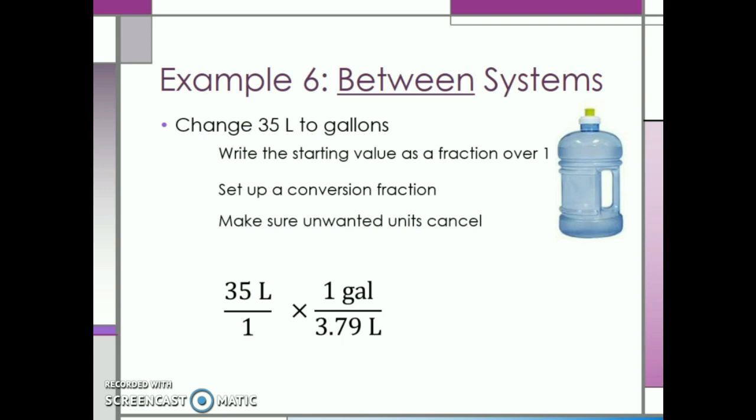Now, cancel the unwanted units of liters over liters. Last, multiply across and divide. 35 divided by 3.79 is approximately equal to 9.23 gallons, rounding to 3 significant digits. This concludes our discussion on measurement conversion.